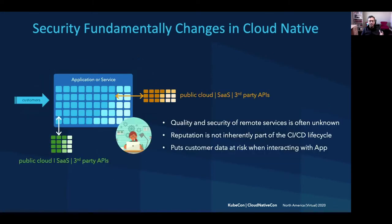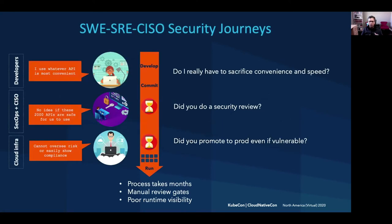As she uses these globally distributed APIs, which are either homegrown or from external providers, the quality and security of these remote services is often unknown. The pivot on API reputation is not inherently part of the CI/CD process, which might put your customers' data eventually at risk. This risk causes all kinds of unwanted behavior. Developers want convenience and velocity. Security SRE, SecOps, and CISOs pound the table for reviews and are still unsure whether the 2,000 APIs being used are safe or compliant. Platform and cloud engineers are always worried that insecure code has been pushed to prod — and all of these reviews and gates and meetings just add complexity and opacity to the simple job of developing and deploying fast.